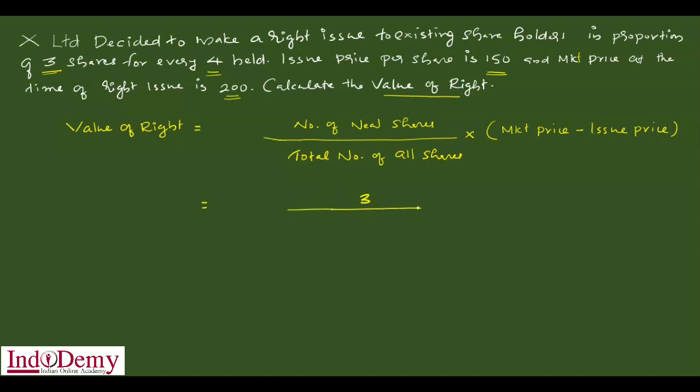Total number of all shares means existing shares plus new shares. Four existing shares plus three new shares, so the total number of all shares will be seven.